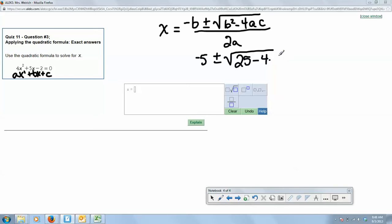So a in this case is 4, and c in this case is negative 2. And then this is all over 2 times a, which is 4.